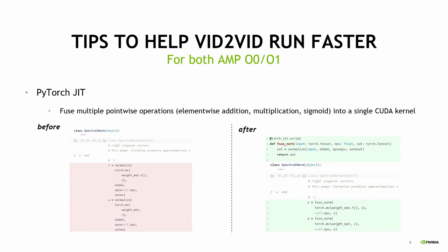Another example where we used JIT is in spectral norm, which is pretty often used in a lot of GAN frameworks. In spectral norm, we have U and V tensors that we need to normalize. Instead of doing individual operations, we can fuse them using JIT into a fused norm, which is faster than doing individual operations.